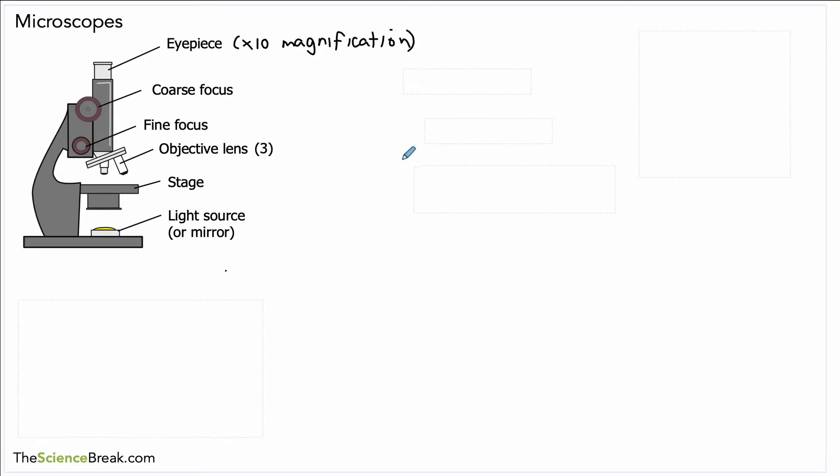And then there's another part that does magnifying again, and that's the objective lens or the objective lenses. They can have a magnification of times 4, times 10, and times 40. These are common values of magnification for objective lenses.